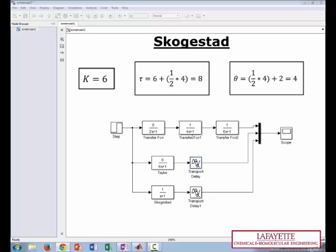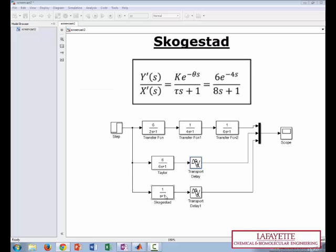The dead time is equal to the other half of the second largest time constant plus all of the others. So we have the half of the 4, which is 2, plus this 2, which equals 4. So our dead time is 4. Therefore, our Skogestad approximation is 6 times e to the negative 4s over 8s plus 1.